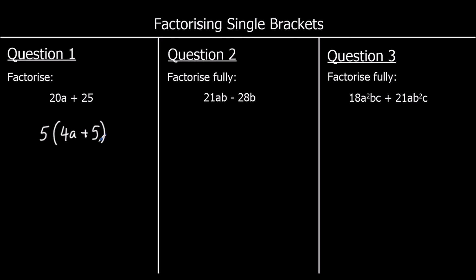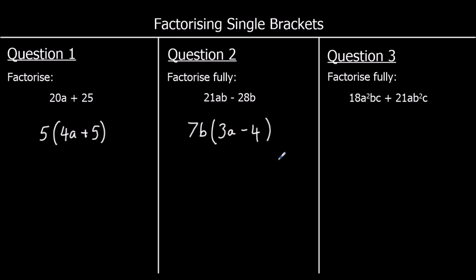Question 2: factorize fully. So we know we're taking more than one thing outside the bracket. For 21ab minus 28b: 21 and 28 are both in the 7 times table, so 7 comes out. They've both got a b in them, so 7b goes outside the brackets. 7 times 3 is 21, and b times a is ab. 7 times 4 is 28, so 7b times negative 4 is negative 28b.